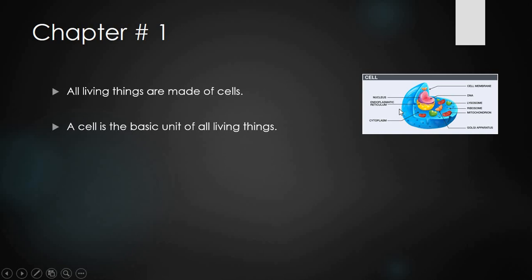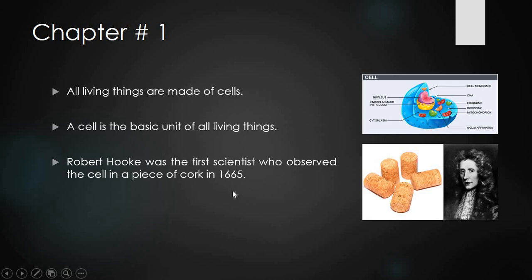Robert Hooke was the first scientist who observed the cell in a piece of cork in 1665. This is Robert Hooke. He had a piece of cork, and in 1665 a cell was first seen in this cork element.